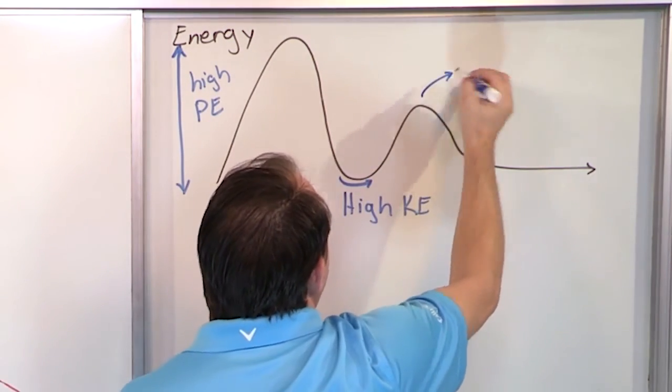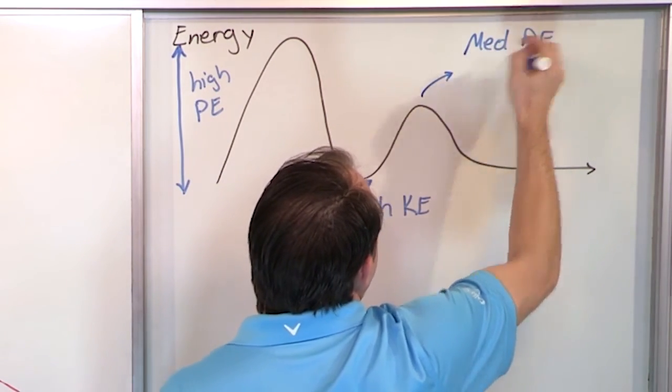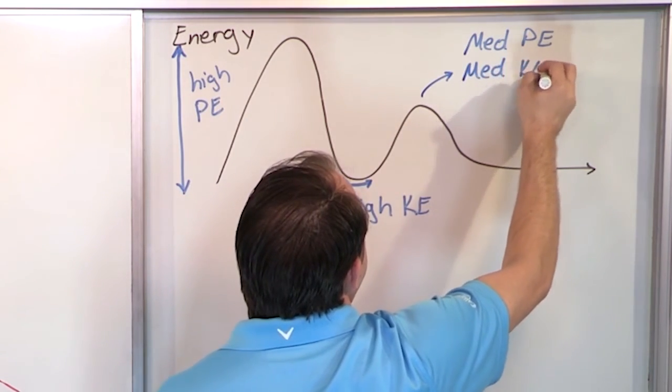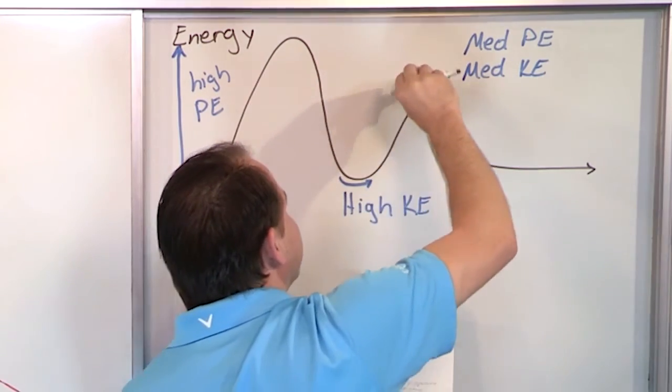And then here, over at this part, what do you have? Well, you have medium potential energy because you are a little higher off the ground, but not as high as here. And you have medium kinetic energy because you're not going quite as fast as you were down here. You bleed off some of the speed.